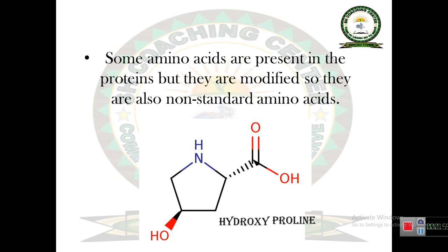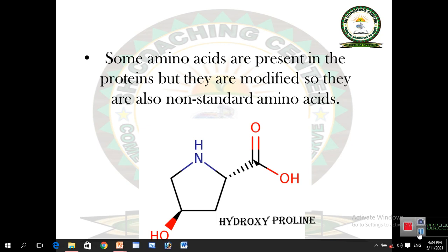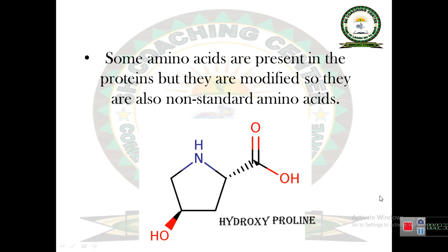When an extra group is attached with a standard amino acid, then that amino acid is known as a derivatives amino acid. Derivatives amino acids are also known as non-standard amino acids. For example, proline is a standard amino acid, but when a hydroxyl group is attached with proline, then that proline becomes a non-standard amino acid — it is a derivatives amino acid.